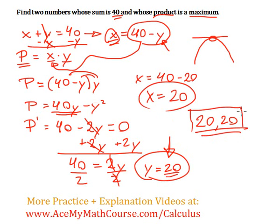So the numbers are 20 and 20. And those are the two numbers that add up to 40 whose product is a maximum.